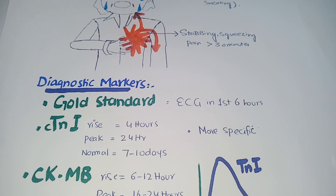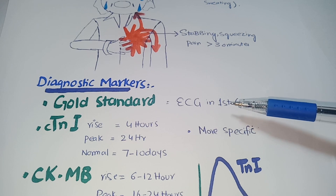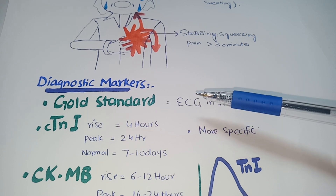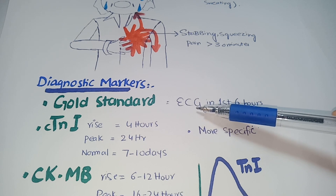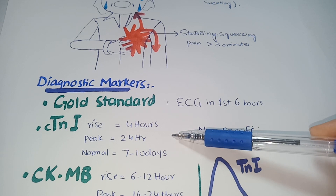Regarding investigation of myocardial infarction: during early stages, it is very difficult to diagnose because there is no gross abnormality and no microscopic changes are present. However, it can best be appreciated through electrical changes. During the first 6 hours, ECG is the gold standard, which manifests the electrical changes of the heart. The next marker is Troponin I.